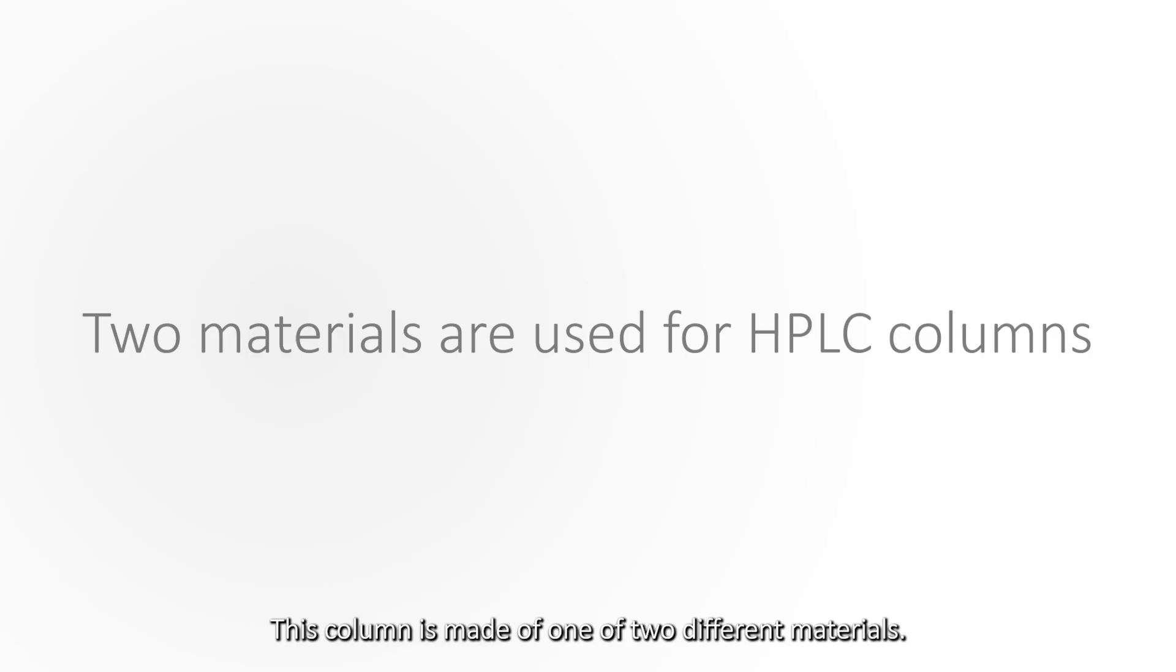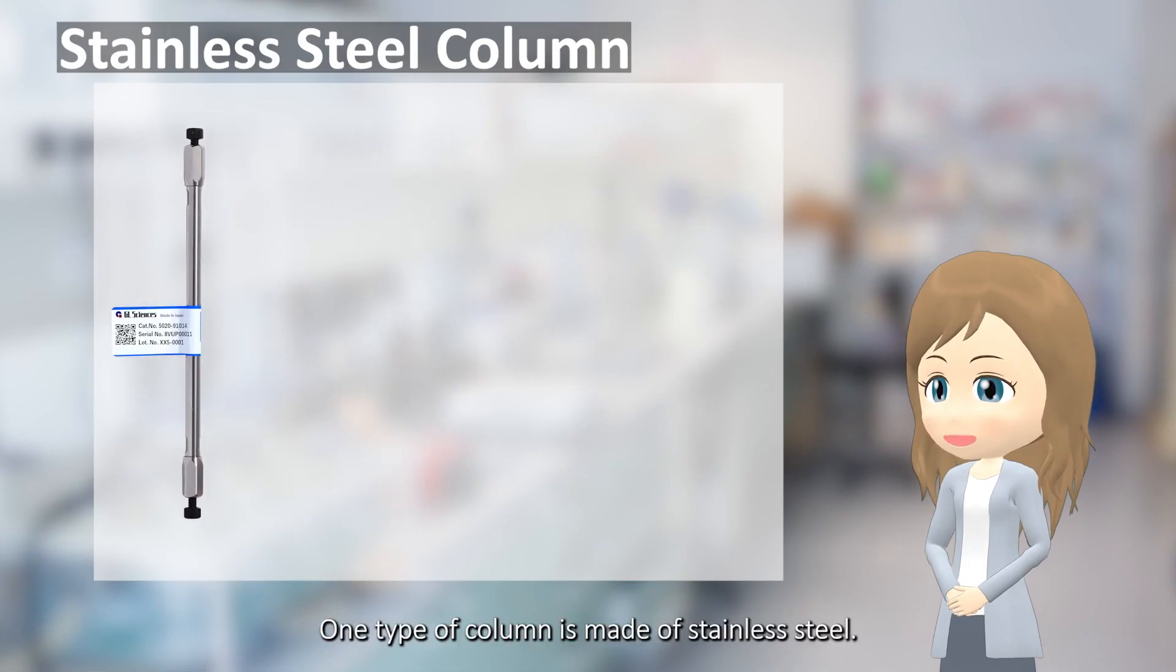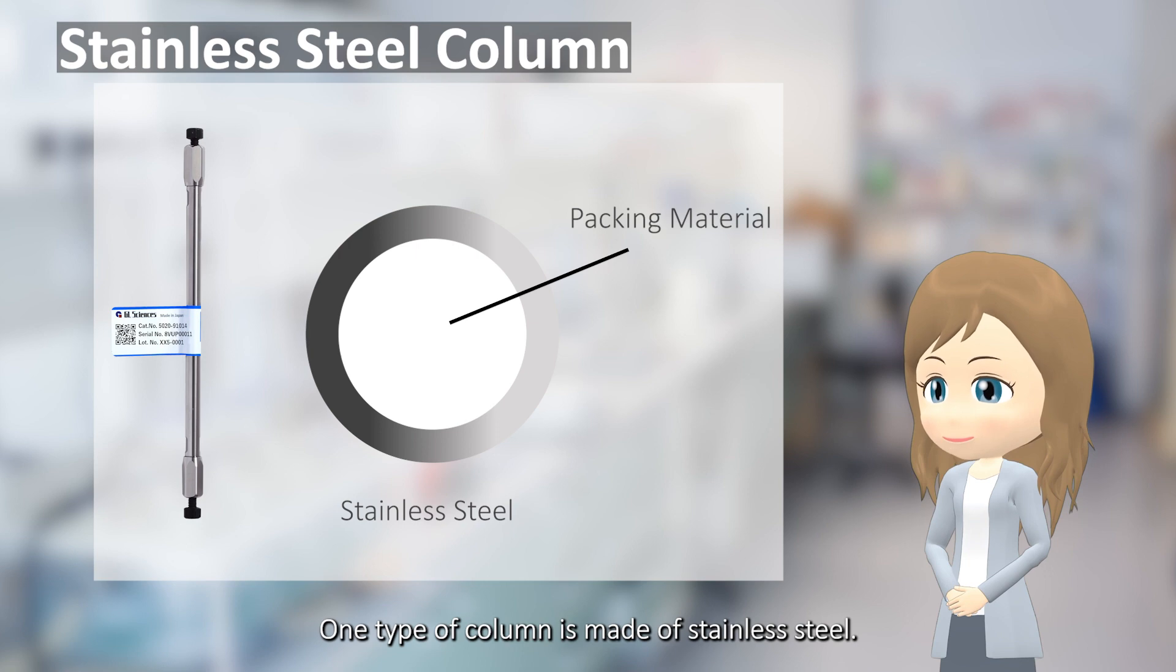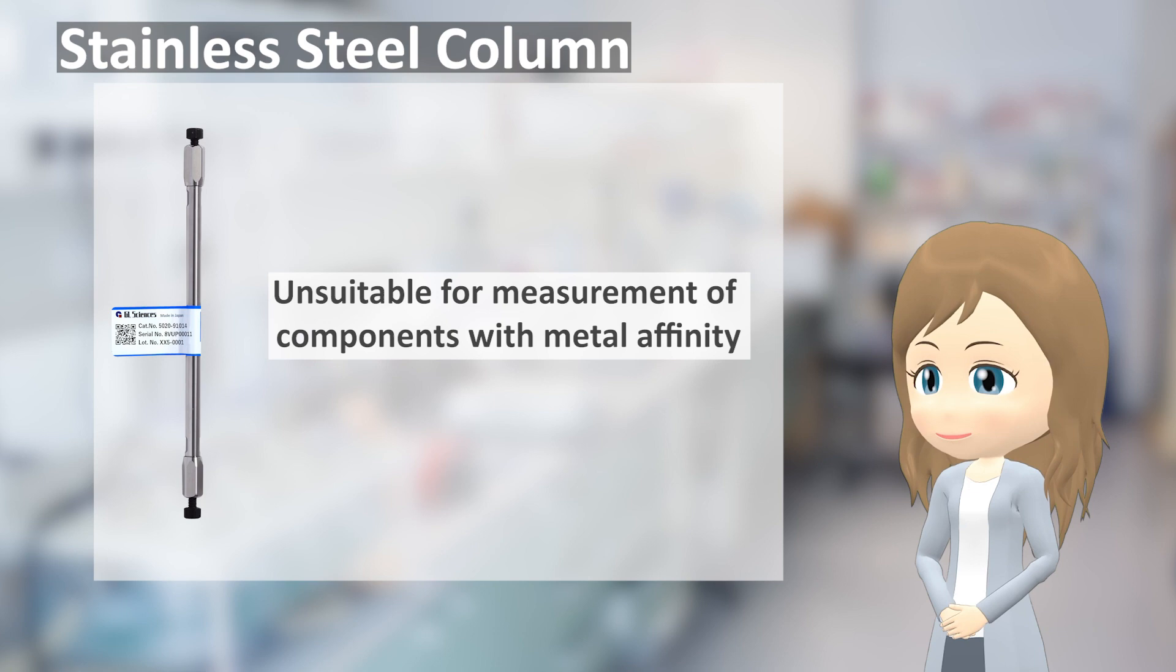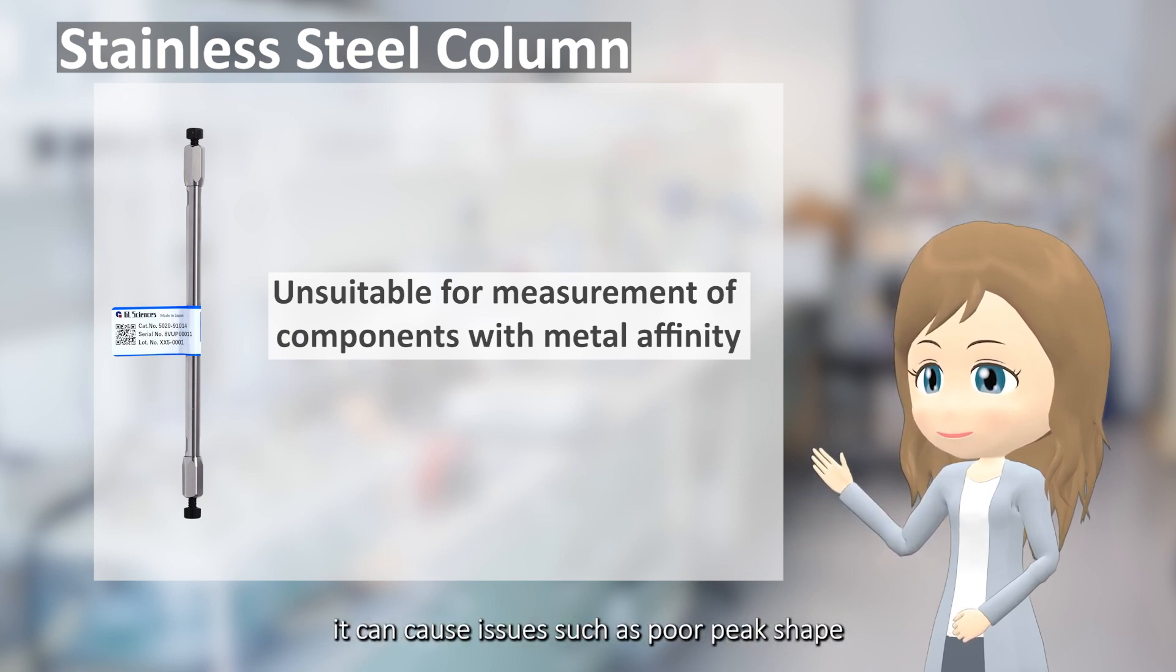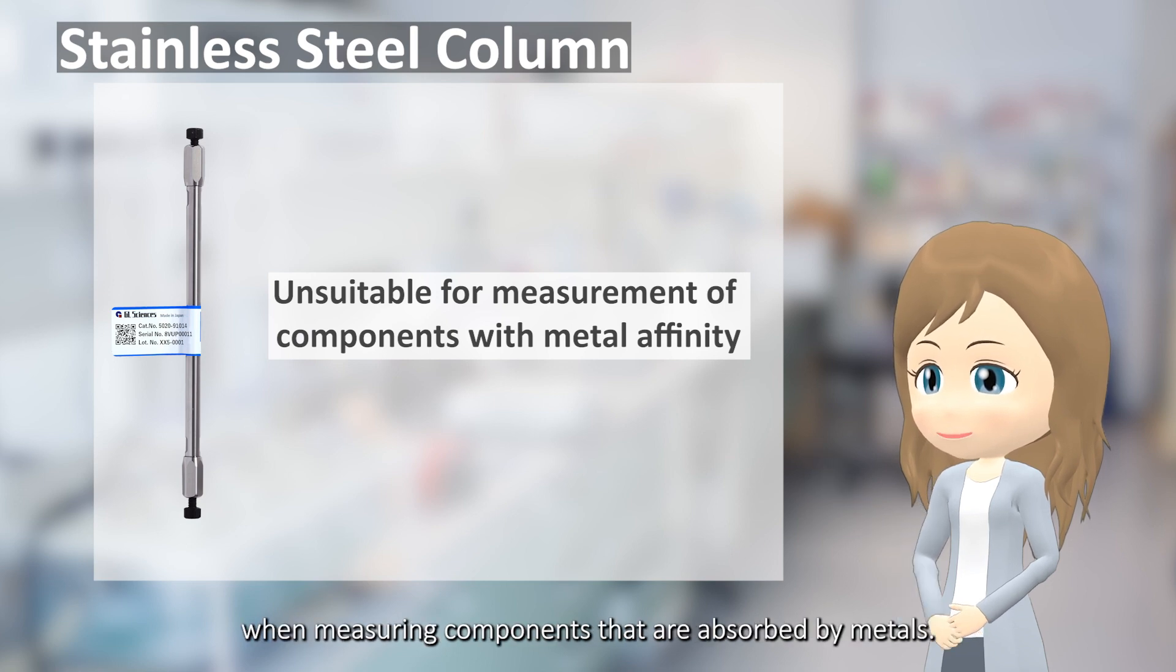This column is made of one of two different materials. One type of column is made of stainless steel. It's commonly used and can withstand high pressures. However, since the column is metal, it can cause issues such as poor peak shape when measuring components that are adsorbed by metals.